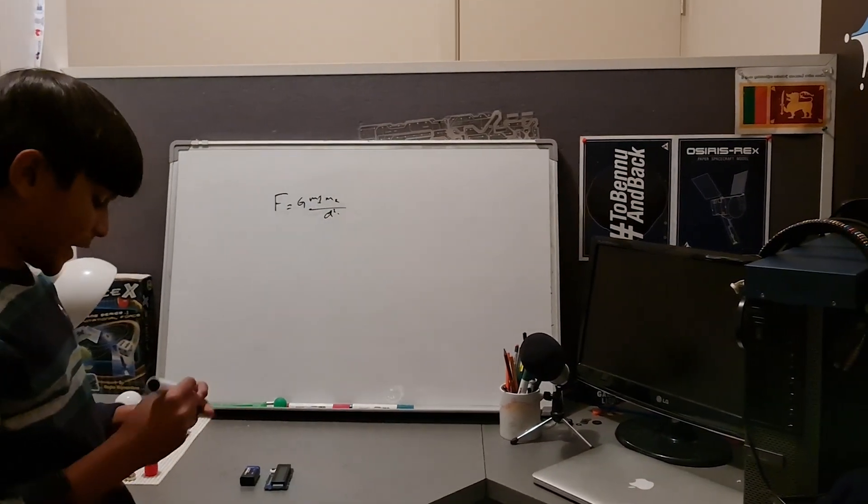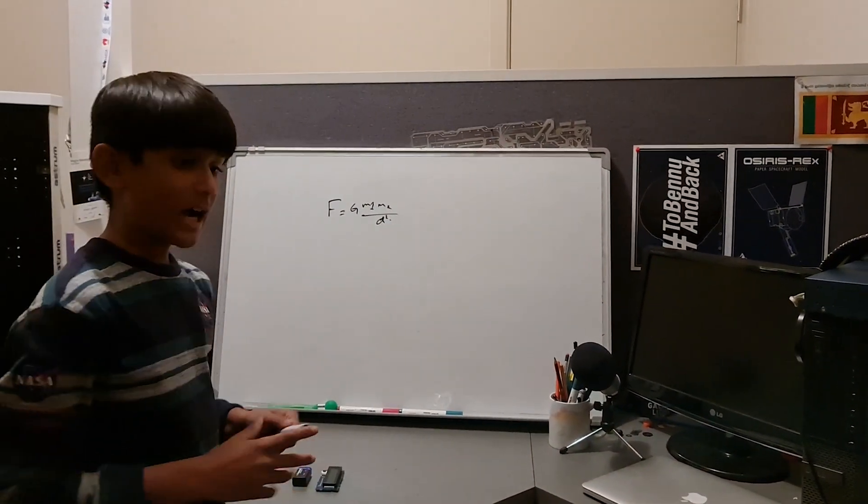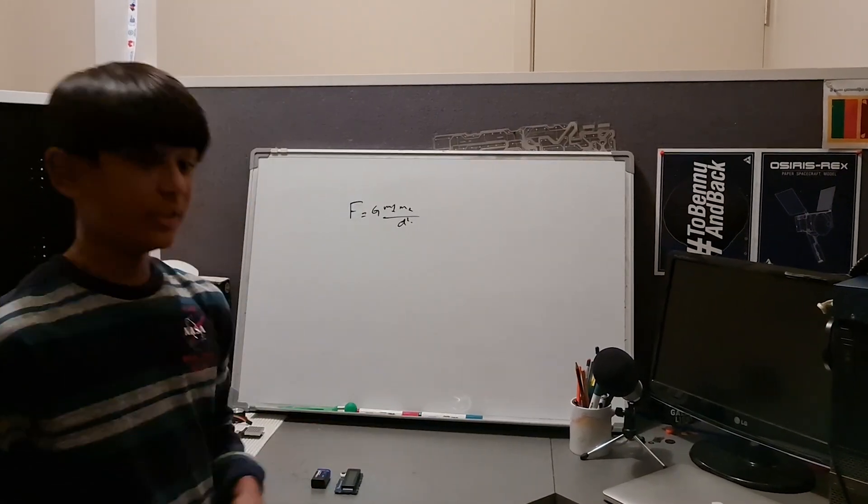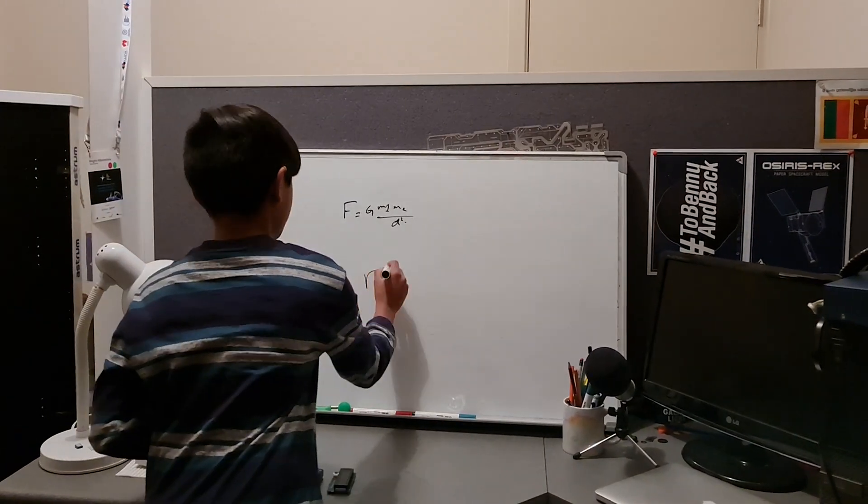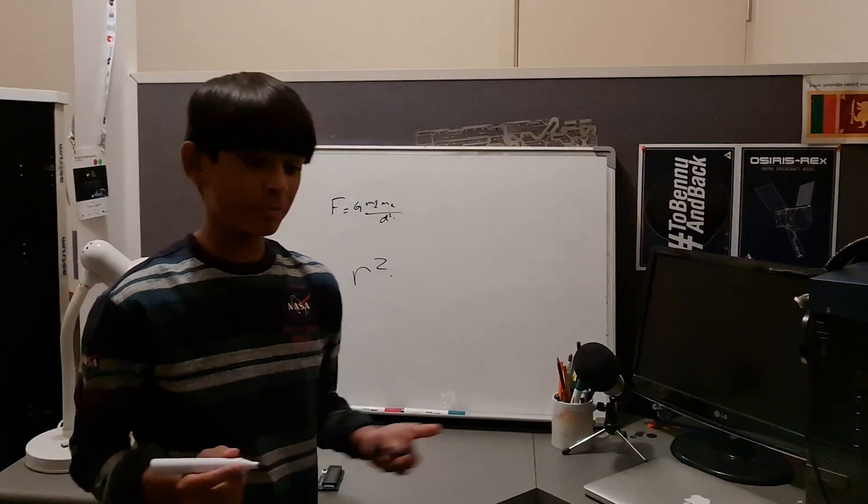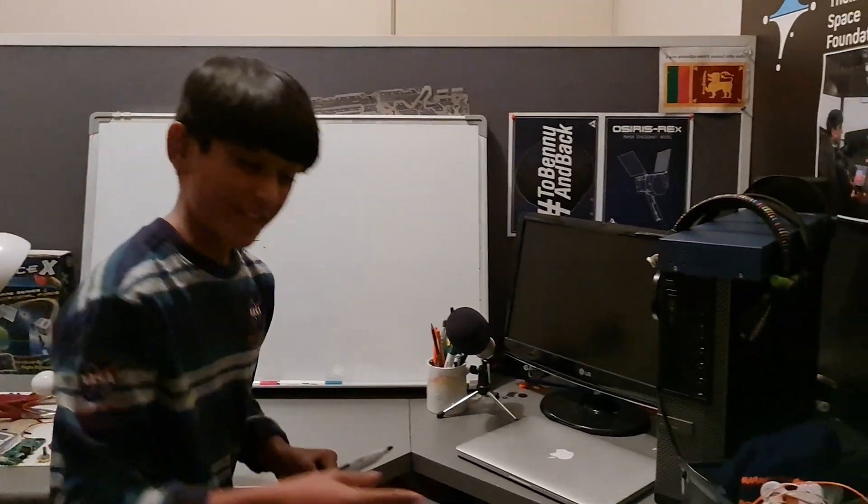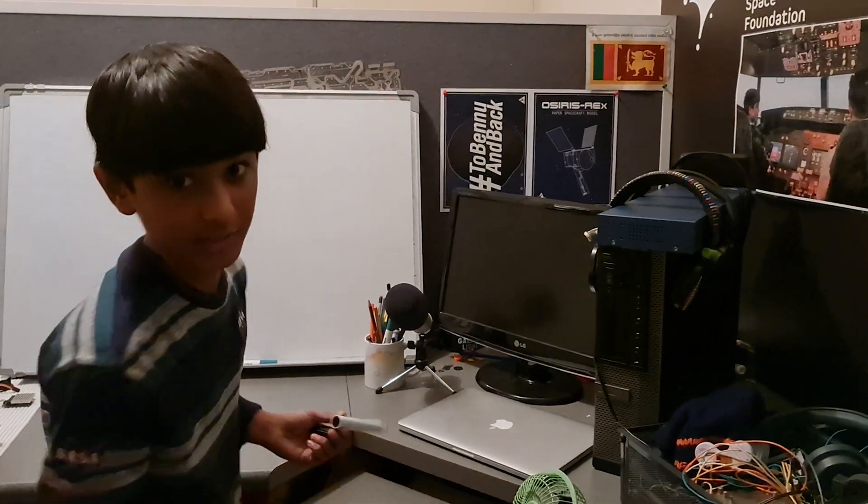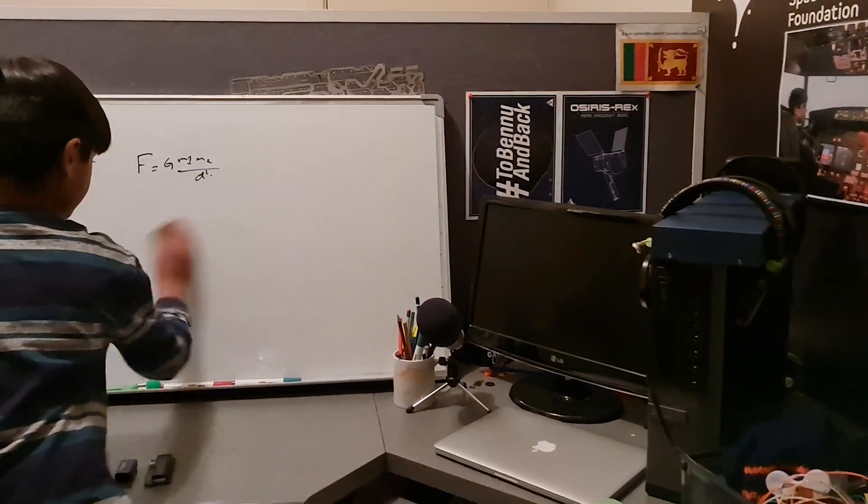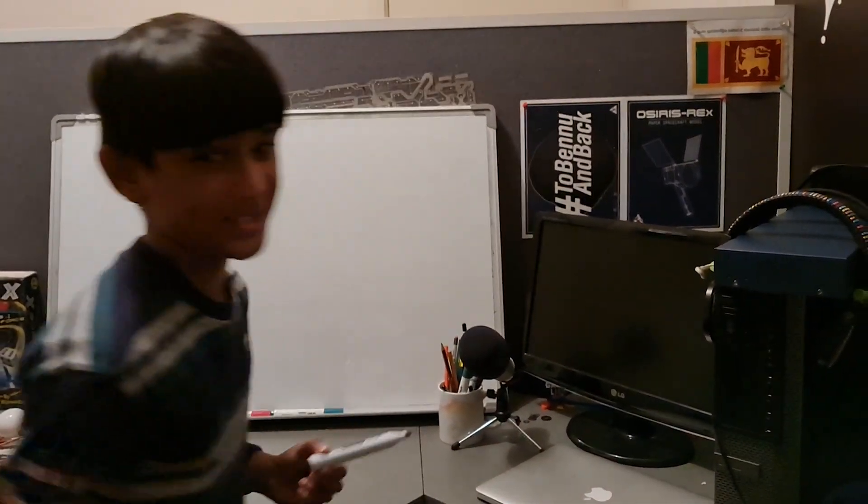Now, the distance between them squared. I actually just represent it as D. You might also see it as R squared, but some people mistake it for radius. And for the sake of simplicity, I'm just going to call it D because it's not radius, it actually means distance.